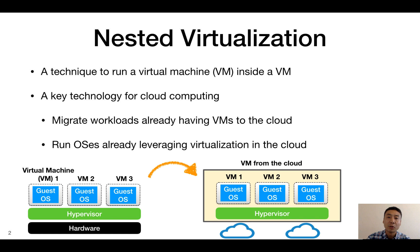For example, if you want to migrate your workload, including a hypervisor and VMs, to the cloud, nested virtualization can make the whole workload run inside the VM provided by the cloud provider. In addition, modern operating systems such as Windows and Linux already have built-in hypervisors, so to use the full functionality of these operating systems inside the VM, you need nested virtualization support.